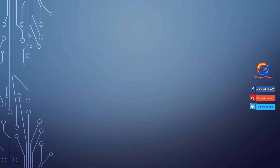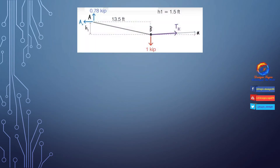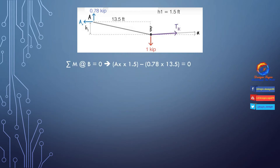Let's cut a section at joint B. The free body diagram after cutting at B shows force TBC due to cable BC making angle alpha with the horizontal. Using summation of moments at joint B equals zero: Ax × 1.5 − 0.78 × 13.5 = 0, where Ax makes a counterclockwise moment and the 0.78 kip reaction makes a clockwise moment. Solving gives Ax = 7.02 kips.